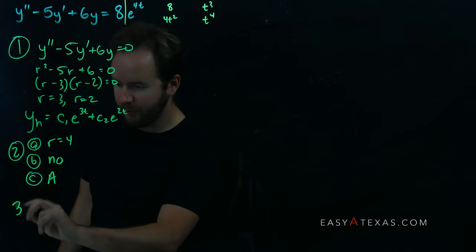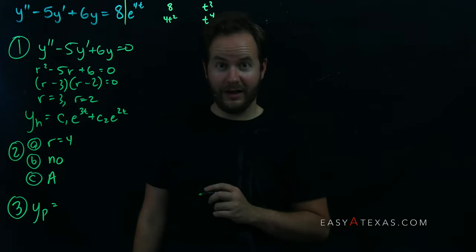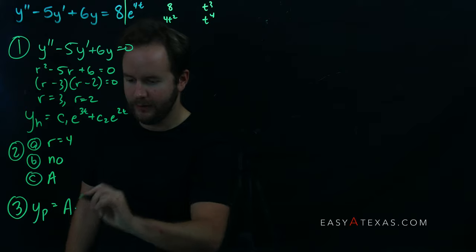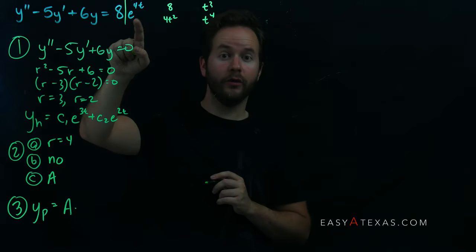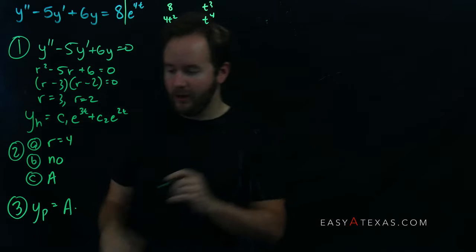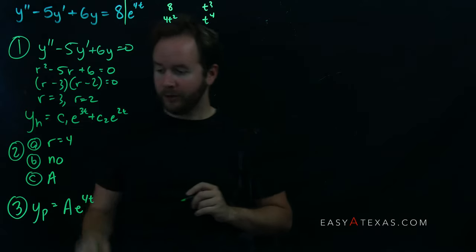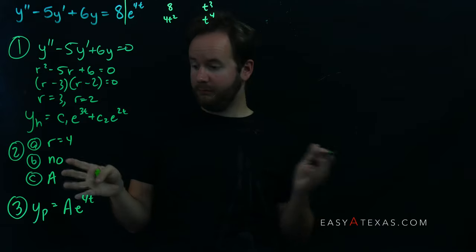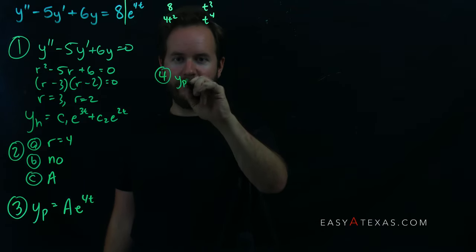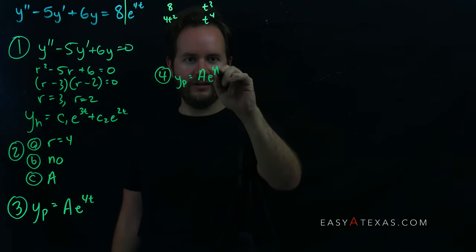Step 3: create your particular solution. Your particular solution is your answer from 2c — in this case just 'a' — times everything on the right-hand side of the line. We just see e^(4t), so yp = a·e^(4t). Step 4 is to compute the first and second derivatives of yp. Since yp = a·e^(4t), we get yp' = 4a·e^(4t) and yp'' = 16a·e^(4t).